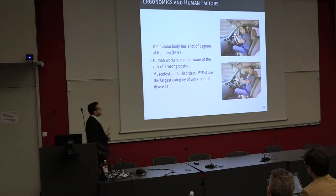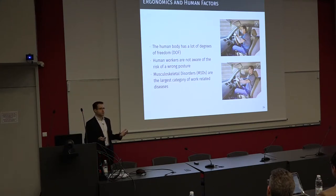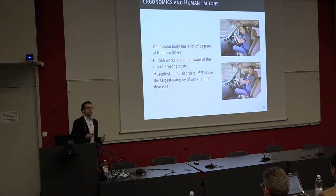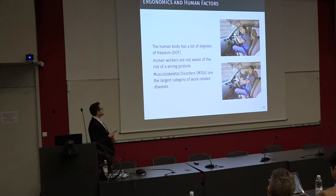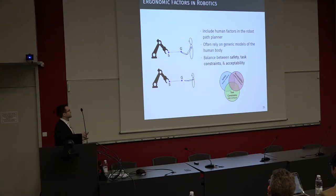If we look at the human body, it has many degrees of freedom, enough to accomplish a task in different postures. Some of those postures are not good for health and would probably lead to what we call musculoskeletal disorders (MSDs). Obviously, doing one bad posture in your life will not cause harm. But if you do it every day, at the end you will feel the pain. The problem is that most workers may not be aware of the risk associated with their wrong postures. So how can we incorporate robots to help workers prevent those kinds of musculoskeletal disorders?